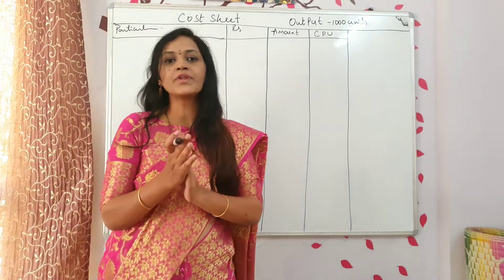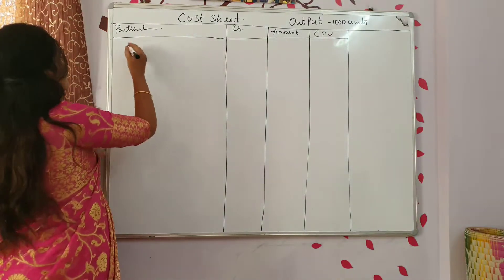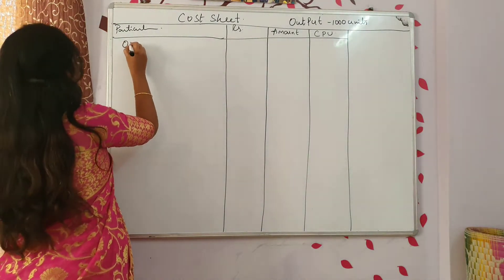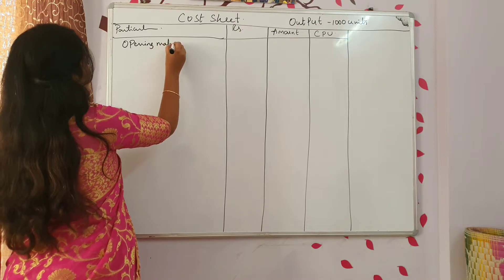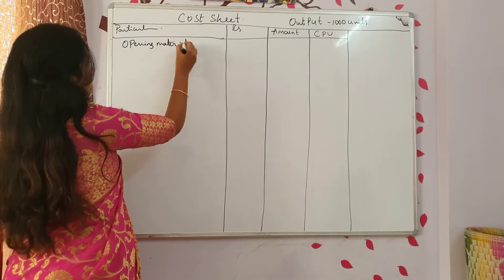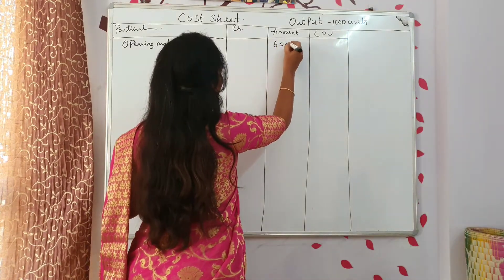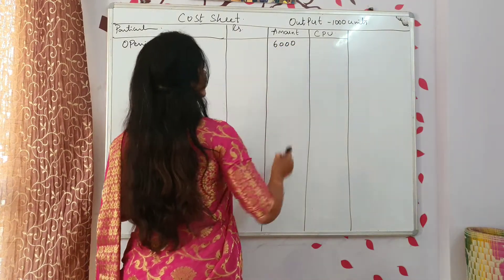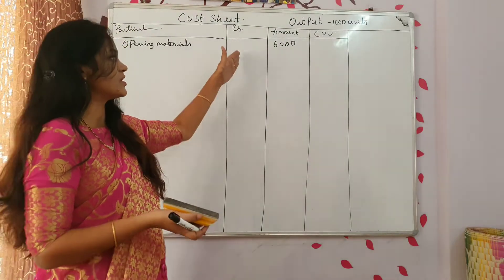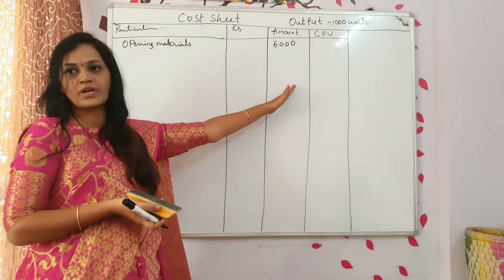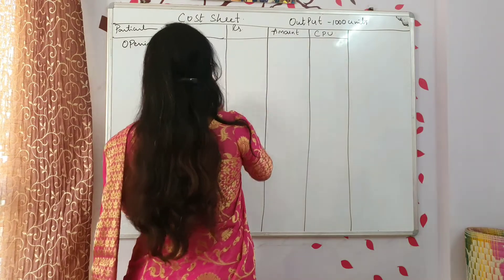So first let us see the data. Is there any opening materials in the given question? Opening materials is there. Stock of materials on January 1st 2014: 6,000 rupees. 6,000 rupees is the opening stock. You can write down directly in the amount column, or you can first mention it in the inner column and then write down in the outer column.